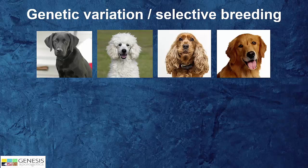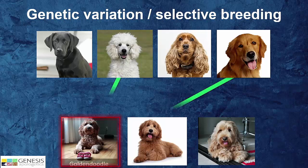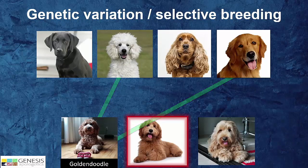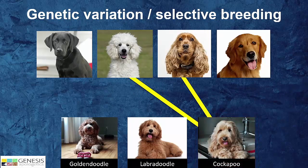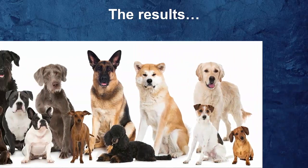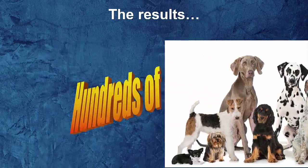Let's play a game. The dogs along the top are the parents, and these cute little guys are the puppies. Let's see if you can guess who the parents are. That first one is a golden doodle. That next cute little guy is a labradoodle. And that adorable little girl is a cockapoo. The result of all this: we now have hundreds and hundreds of different breeds of dogs — tall dogs, skinny dogs, fat dogs, hot dogs, all kinds of dogs.